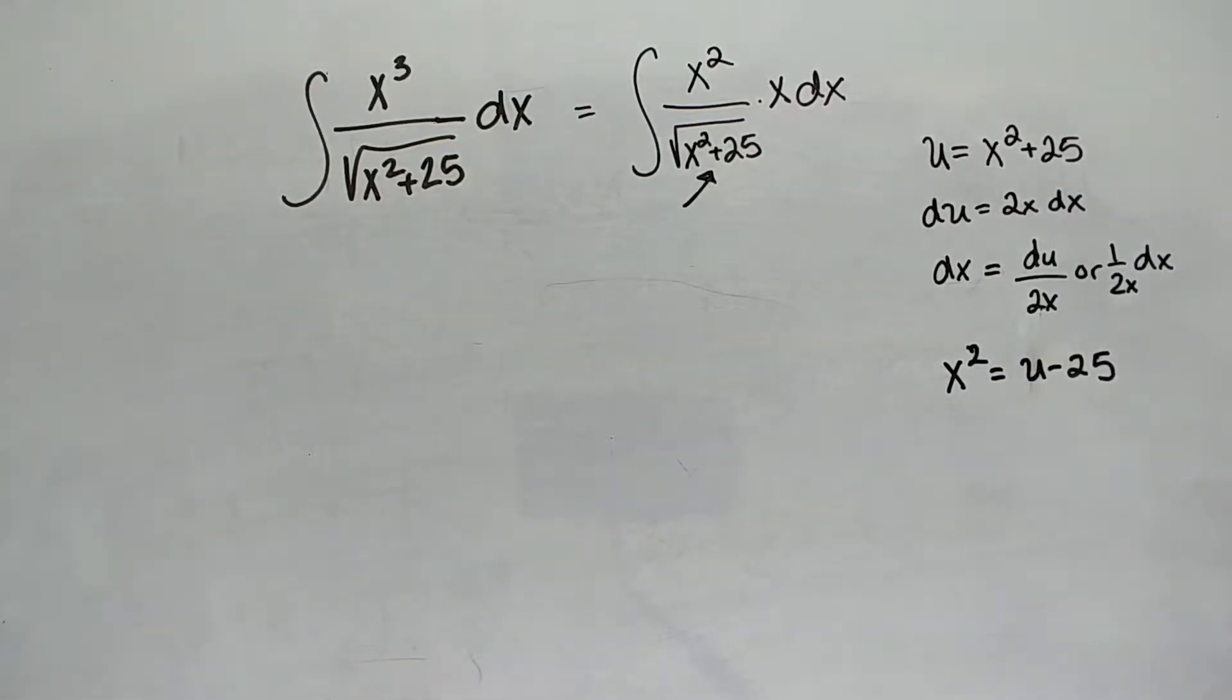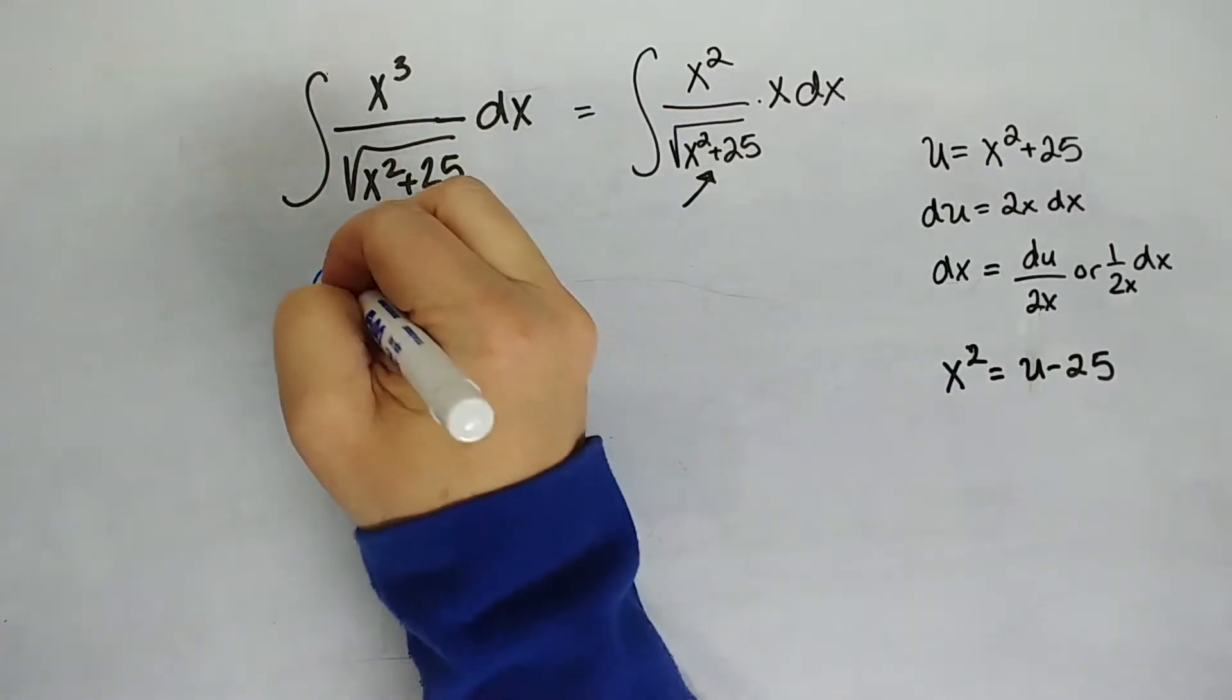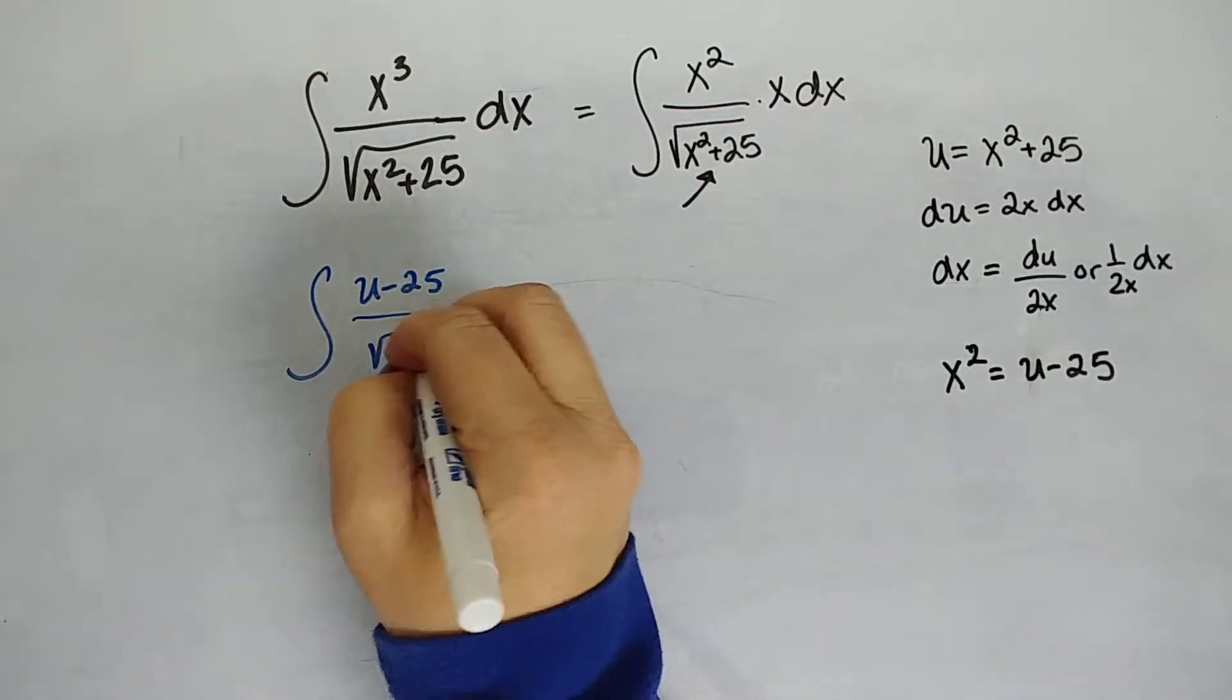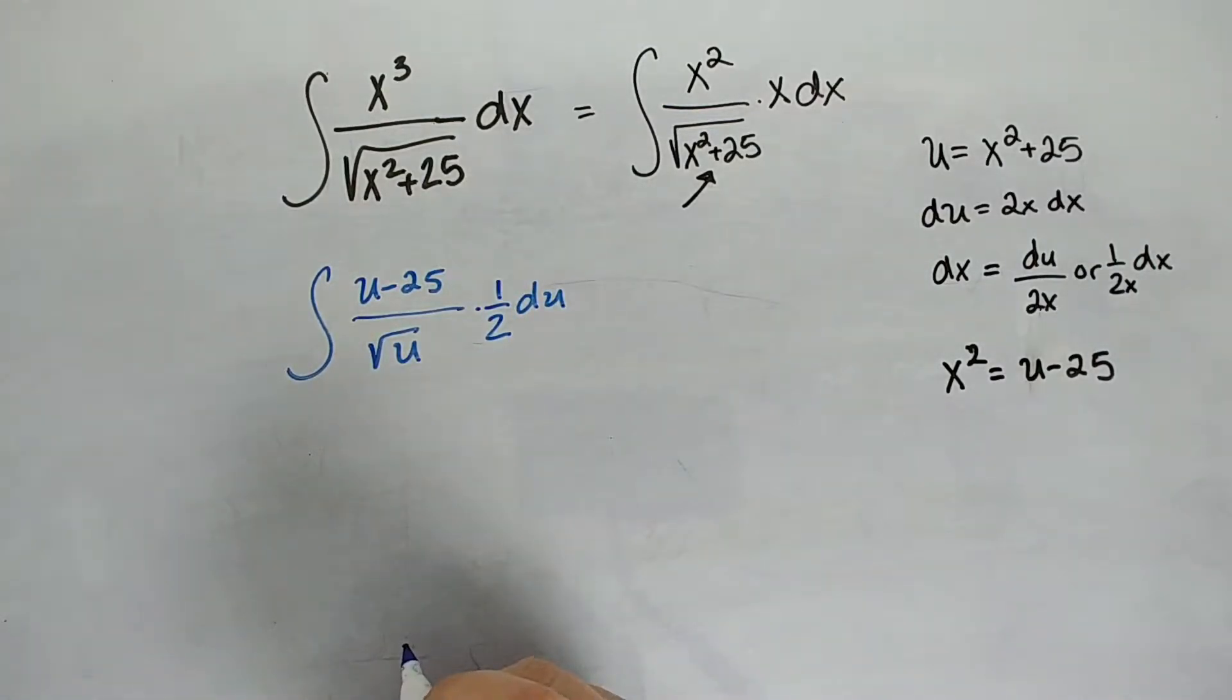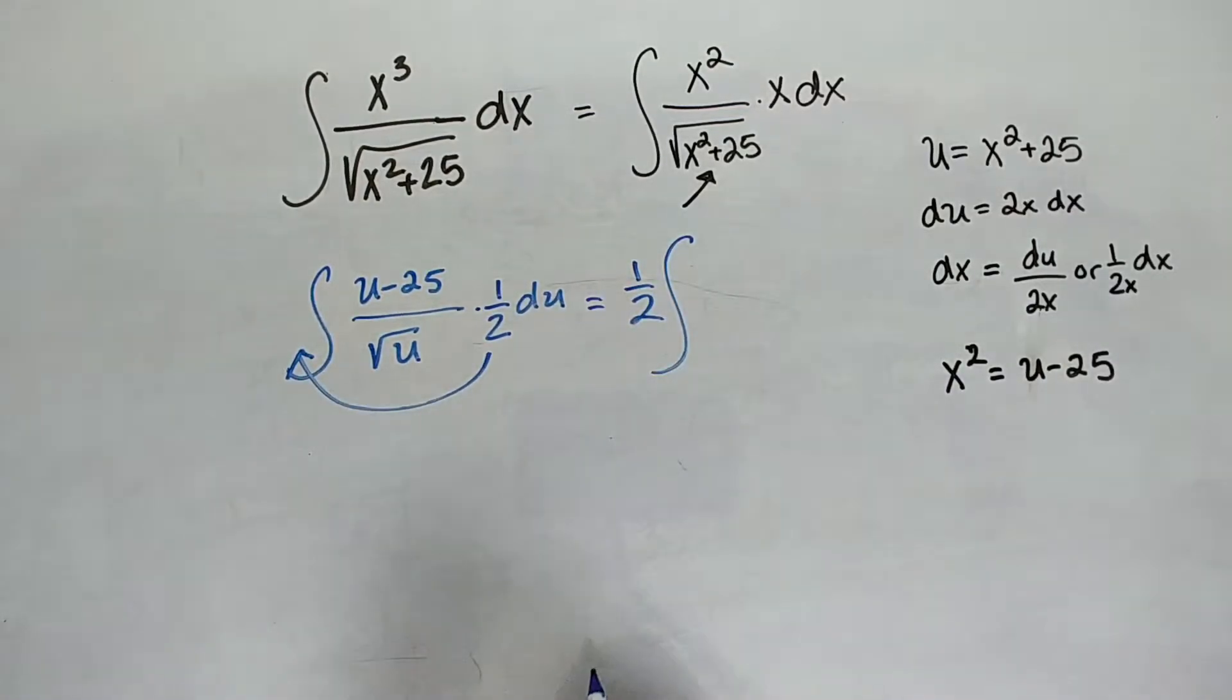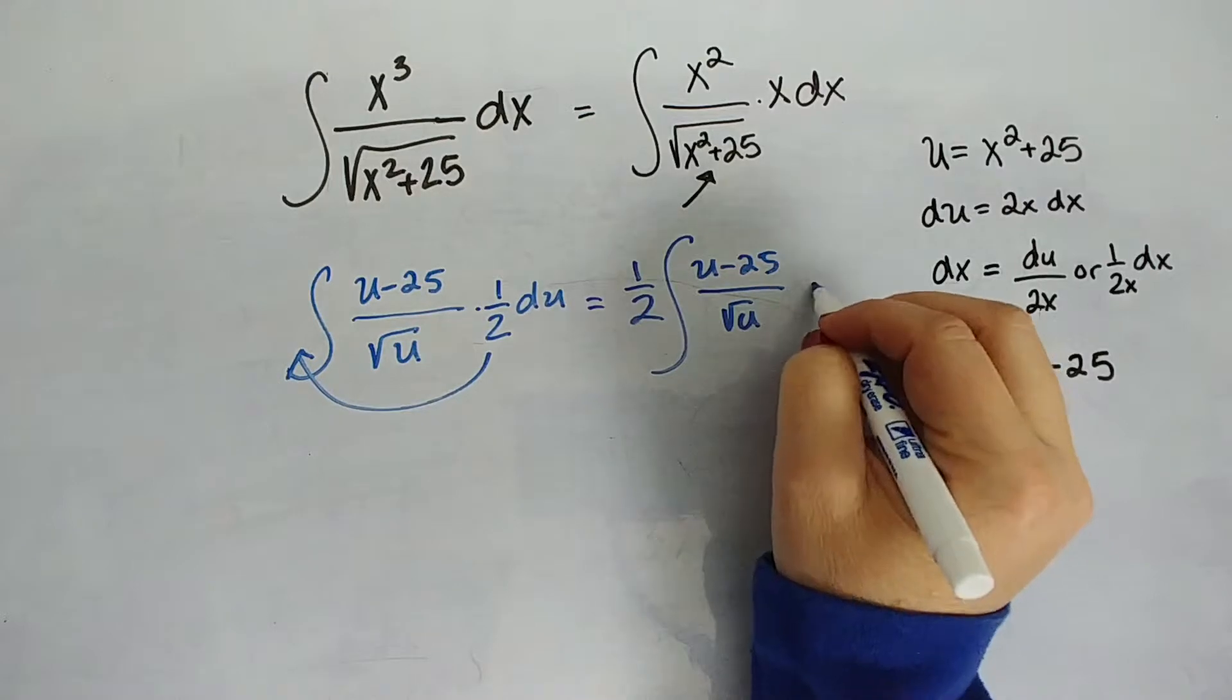Okay, so now I can plug absolutely everything in. So let's start doing that. I'm just making sure there's nothing else I really want to do. So my x squared is u minus 25 all over the square root of u. So far, so good. Times, well, my x cancels, so I get 1 half du. Don't worry, I'm not going to leave that like that. I'm going to for sure pull that out. So 1 half. Remember, we always take out that constant multiplier. So 1 half and now u minus 25 all over square root of u du.